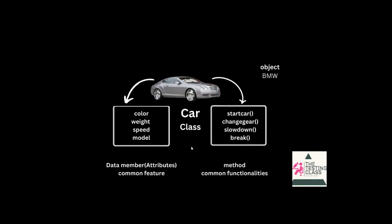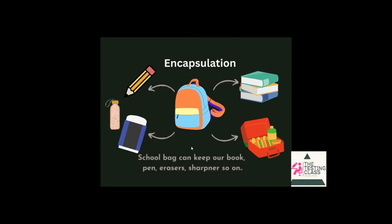And if I want to get specific with this car model, then this is called an object, which is BMW. Car is the skeleton and the specification of that is the object. Next is encapsulation.